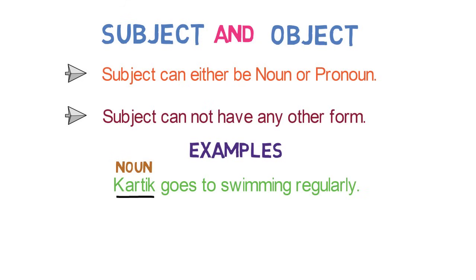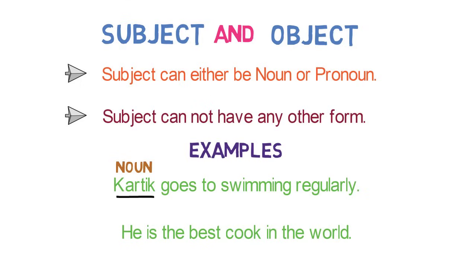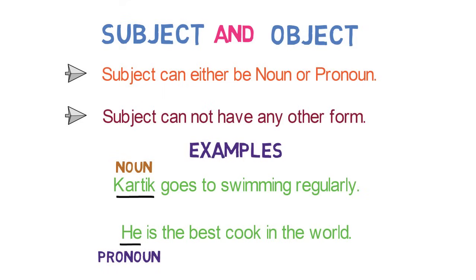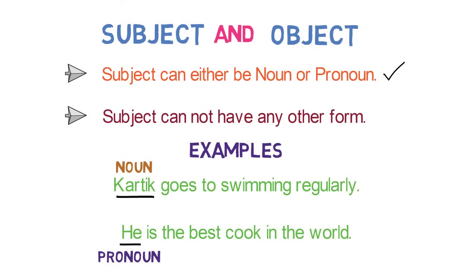Let's see one more example. He is the best cook in the world. Here, he, which is a subject, is a pronoun. Now, looking at the examples, we can say that subject can either be a noun or pronoun.